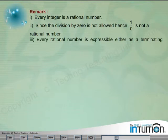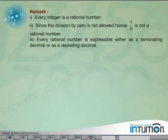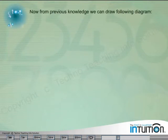Remark 3: Every rational number is expressible either as a terminating decimal or as a repeating decimal. Now, from previous knowledge, we can draw following diagram.